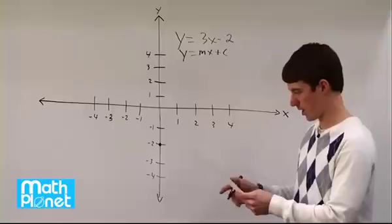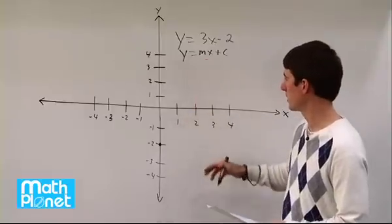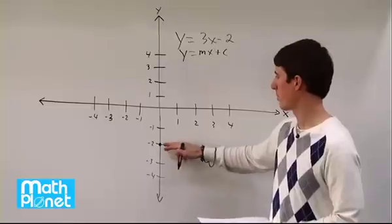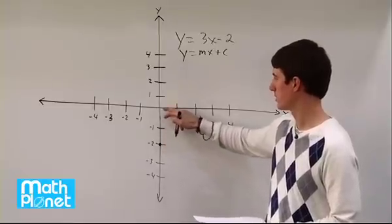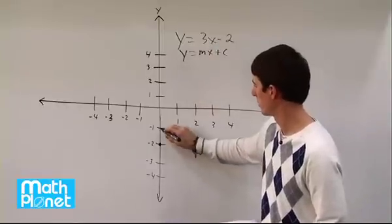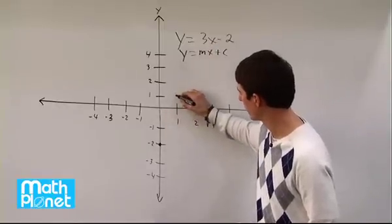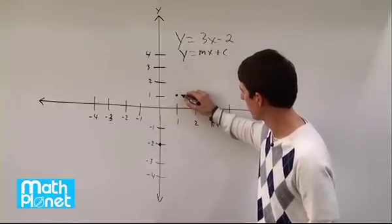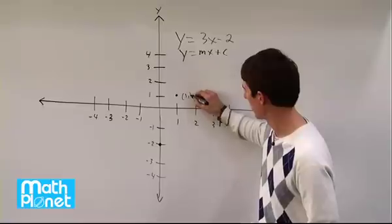Now if we start here and we have a slope of 3, then we can just go up steps of 3: 1, 2, 3, and move over 1. So its slope is positive 3. 1, 2, 3, and over 1 gives us this point here of 1, 1.